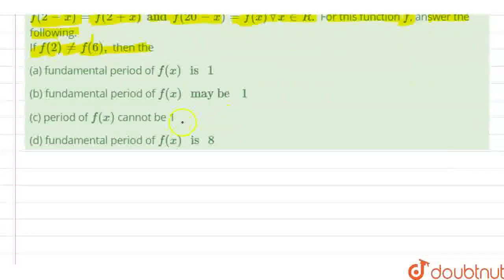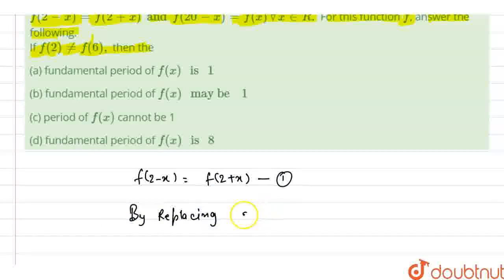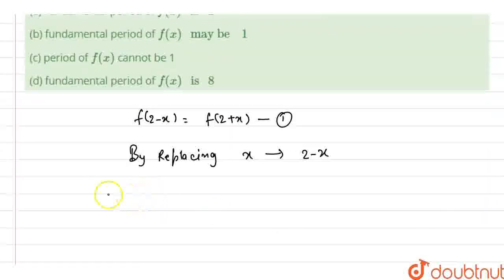In this question we have given that f(2 − x) = f(2 + x) — let's say this is our first equation. Now, by replacing x with (2 − x), what does it become? It becomes f(x) = f(4 − x).